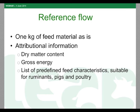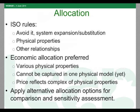Allocation — as mentioned before — is an endless discussion. Here we stick strictly to the ISO rules: when possible, avoid it; if not, see if you can solve it by system expansion or substitution; and if you cannot avoid allocation, go to allocation on the basis of physical properties. If that's not possible, go to other relationships. In the feed sector, we took economic allocation as the preferred option.